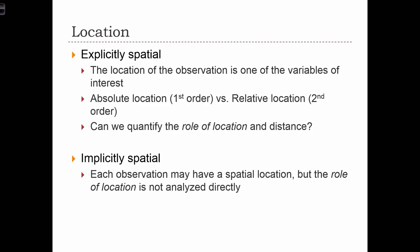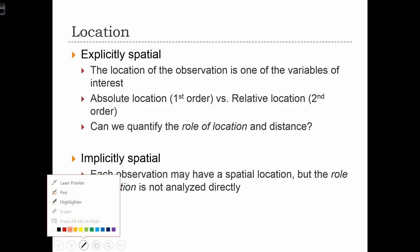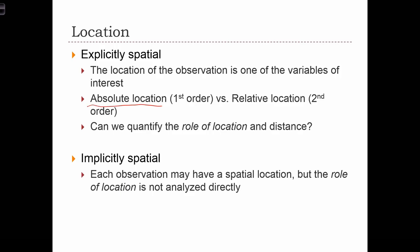And there are two different ways that we can store location about an observation. The first is storing the absolute location, what we'll call first-order location of each observation. And with first-order location, or absolute location, for every observation, we are storing some information about the location of that observation on the Earth's surface.